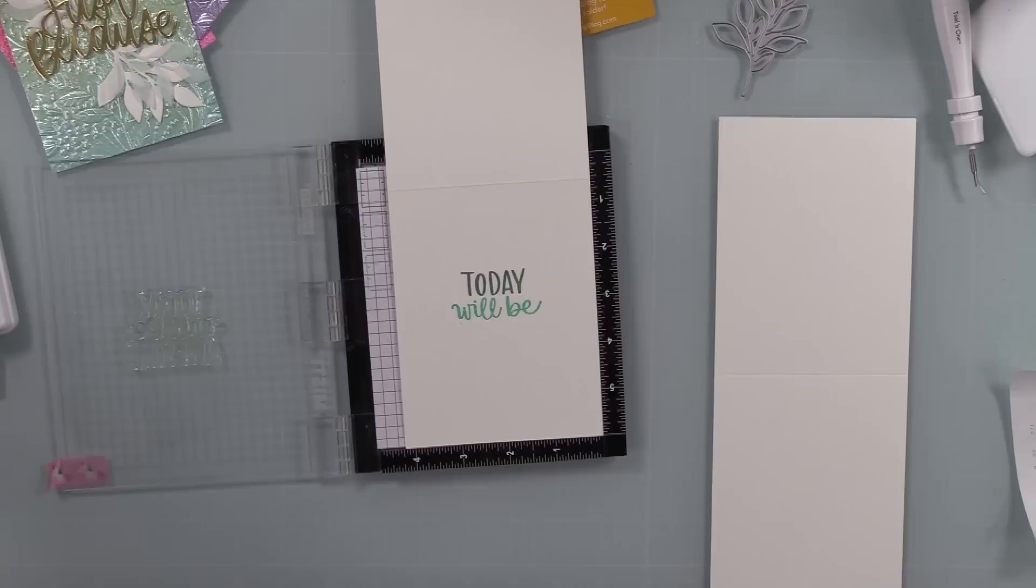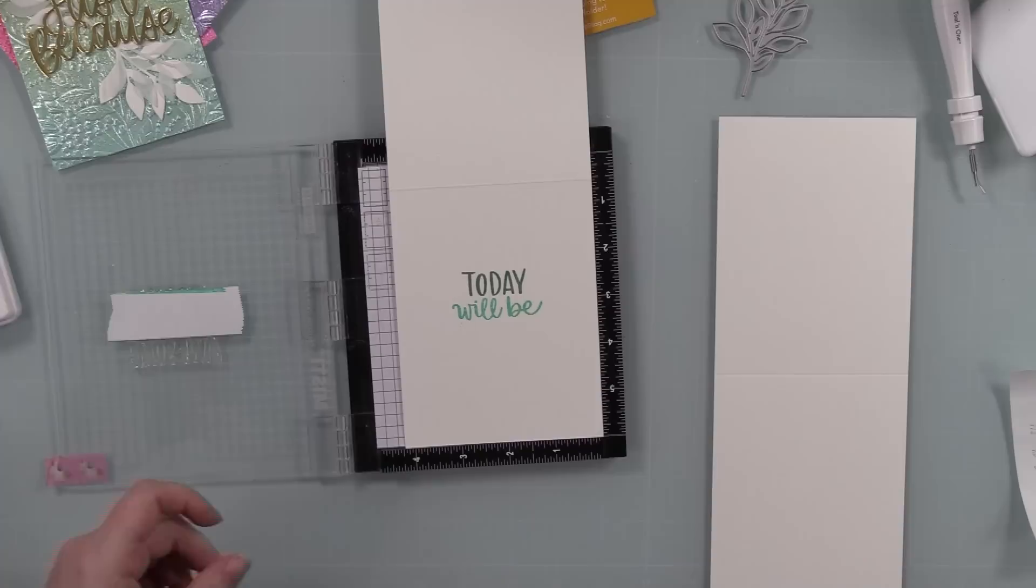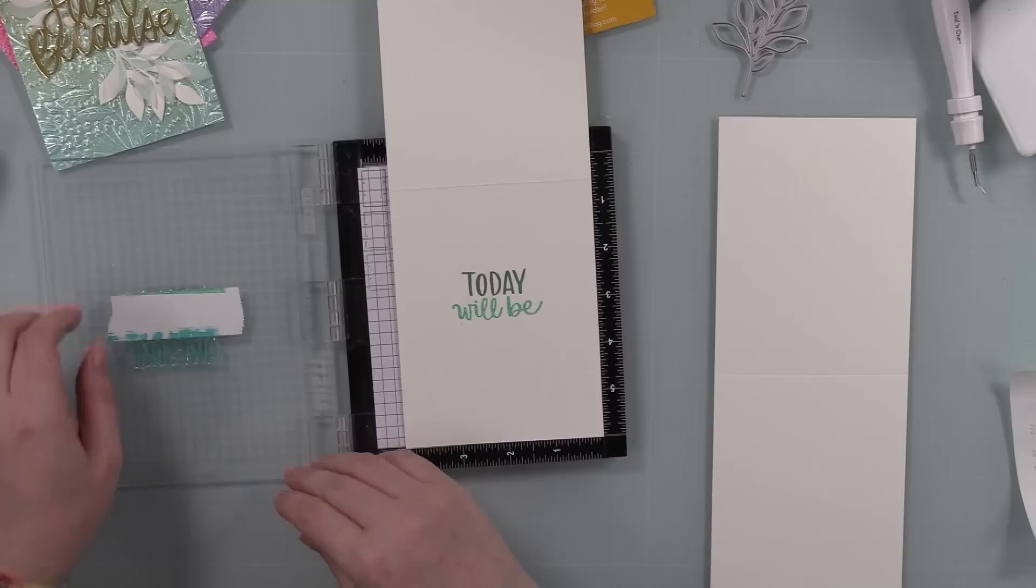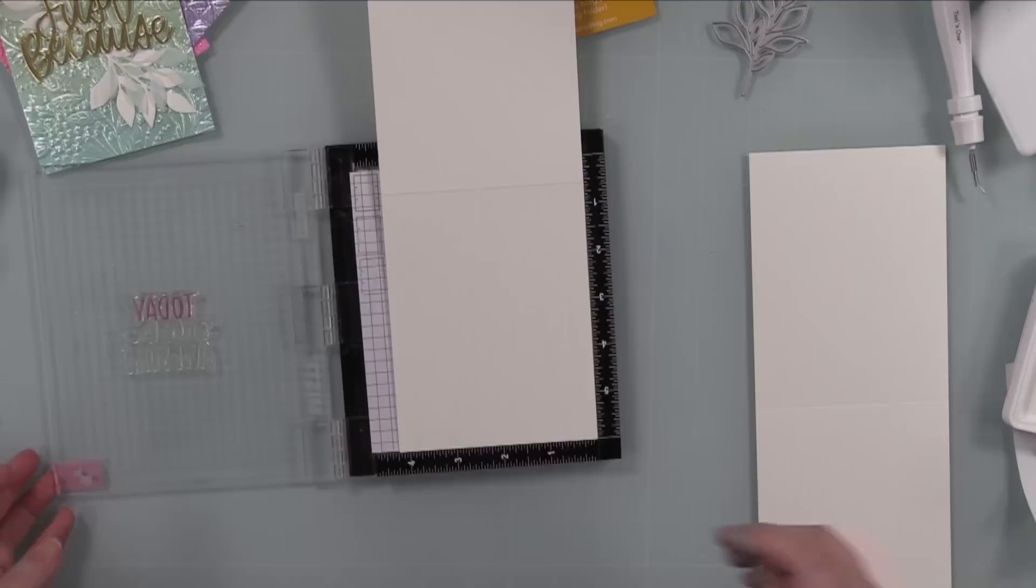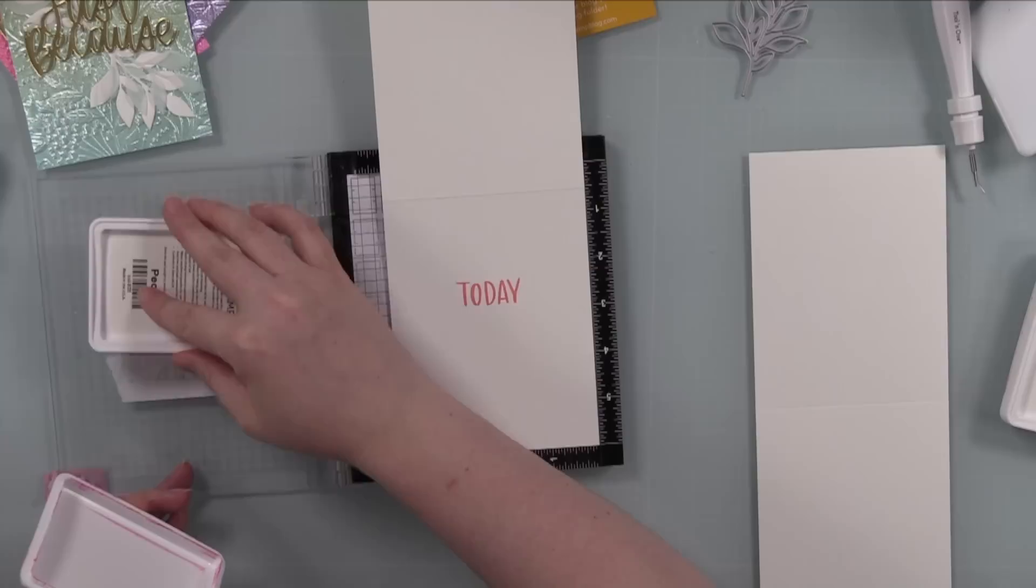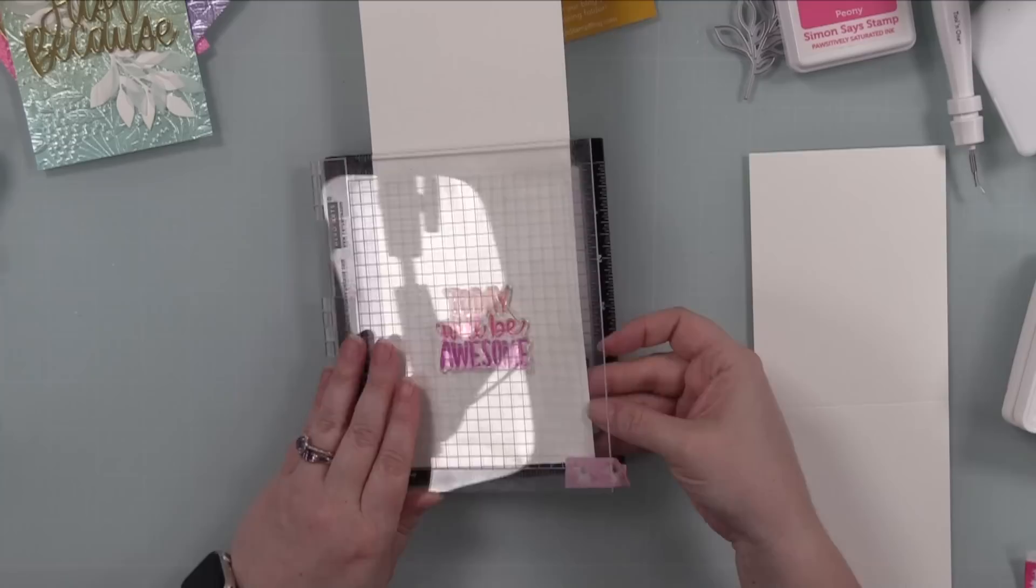So I took the "today will be awesome" sentiment and I am inking it up with all three of the color blends that I did on the card fronts. I'm just using leftover bits of Post-it tape to mask off each line on the sentiment, and then I'm inking them up with those same colors in the same order I blended them on those backgrounds. So the first one, it was sage at the top, tide pool in the middle, surf for the bottom. And then I just repeated the process with the other color blends.